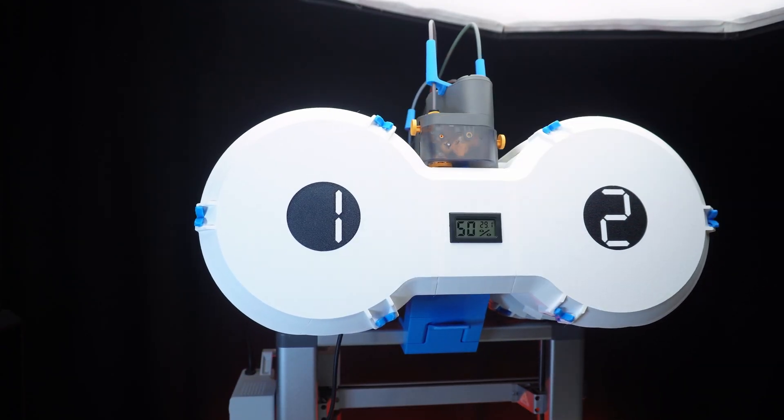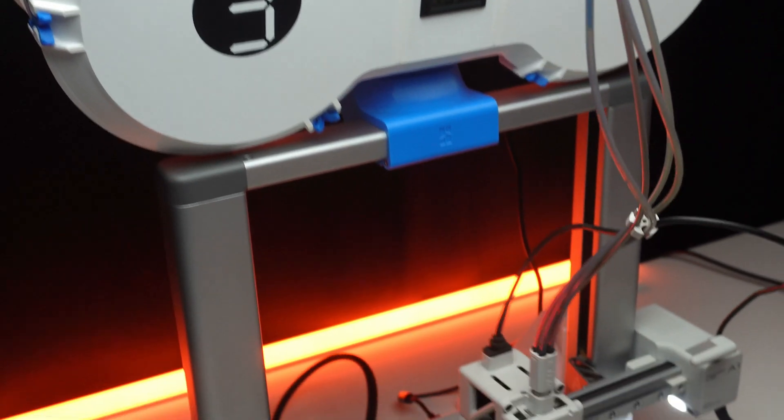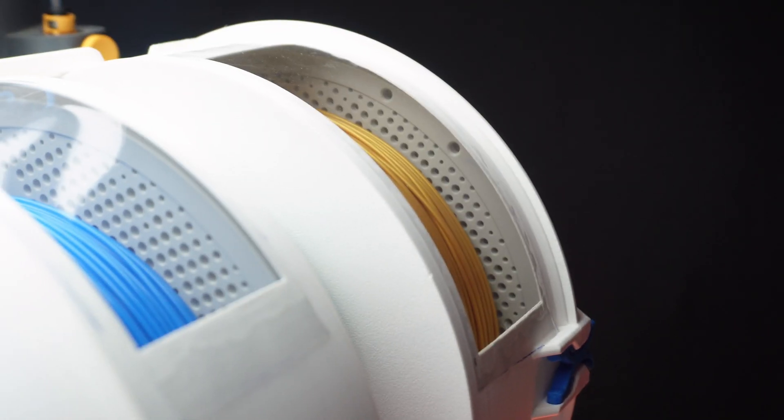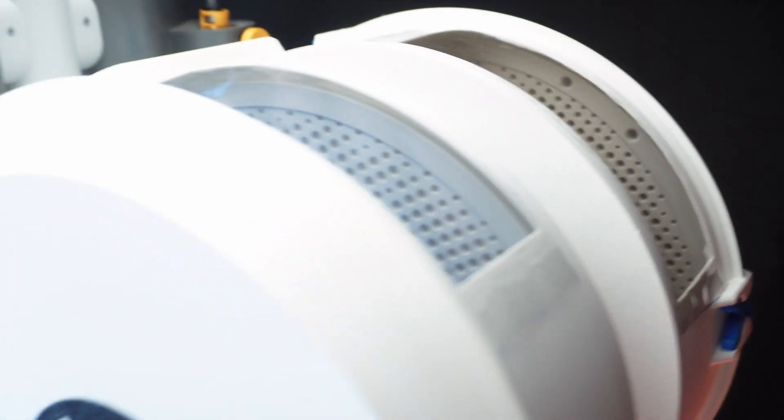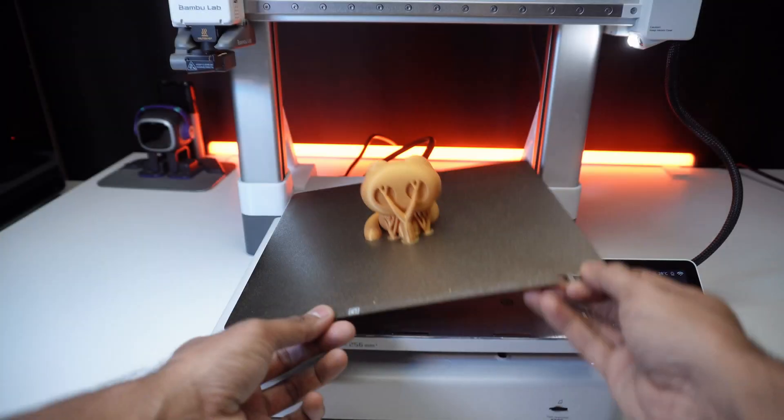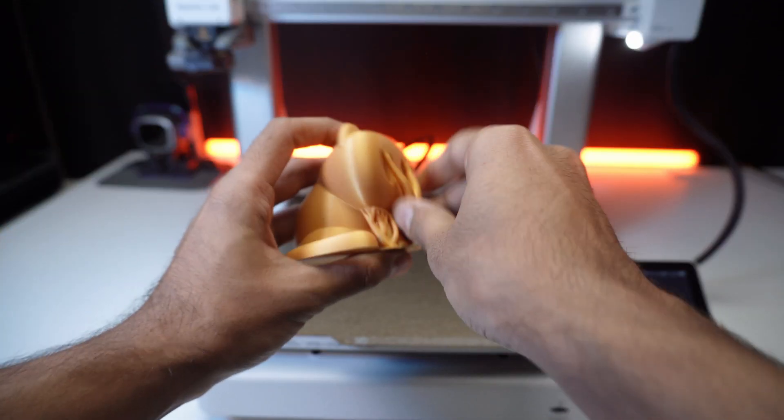Now, let's test it out with a print. The AMS light smoothly pulls filaments from the enclosure and the A1 combo handles the rest. And there you have it, the print came out perfectly.